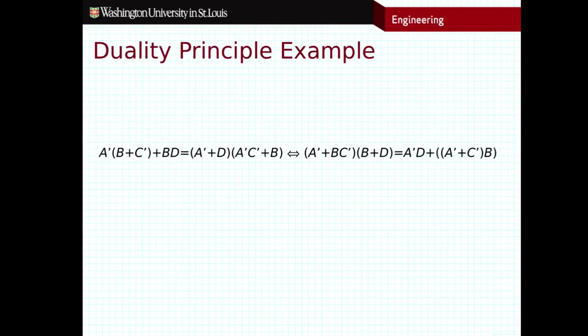In fact, we've already seen the duality principle in play when we looked at the original properties of Boolean algebra. That's what allows us to have the commutative property for both ANDs and ORs, for example. The duality principle, that's a very simple example of the duality principle. Or having an AND and an OR version of the identity property. That's the duality principle in practice. So it is a very useful principle that we'll see pop up when working with these expressions.